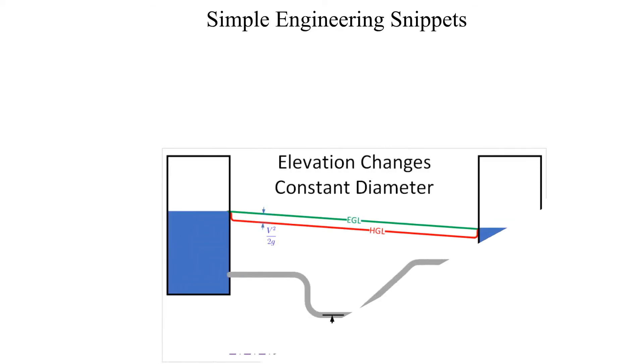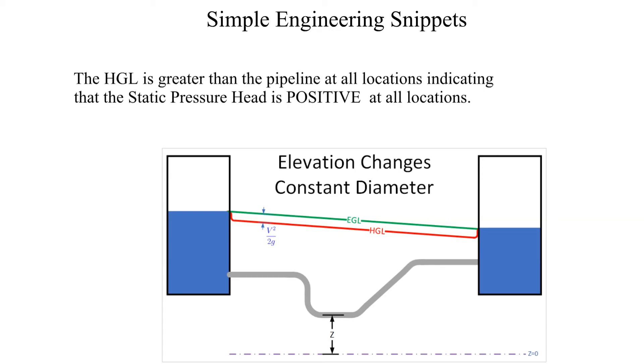Now let's consider a constant diameter pipeline with changing elevations. In this example, the hydraulic grade line is greater than the pipeline at all locations indicating that the static pressure head is positive.